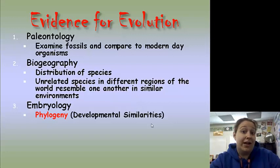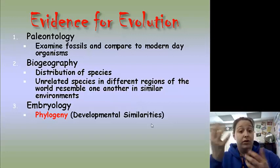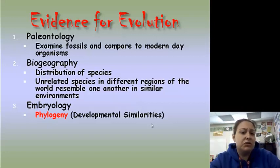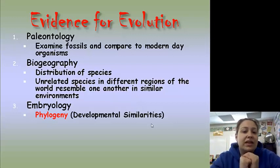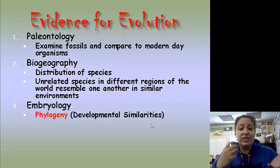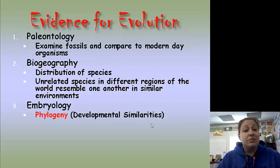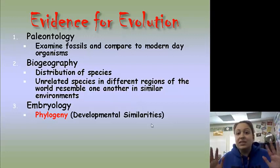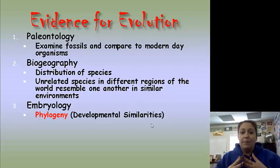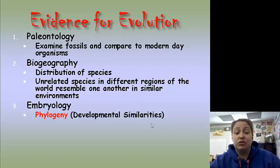Biogeography — bio meaning life, geography meaning where you're located — is the distribution of species. We notice that unrelated species in different regions of the world resemble one another in similar environments. Even if they had no common ancestor at all, if they were in similar environments, they developed similar traits and features.